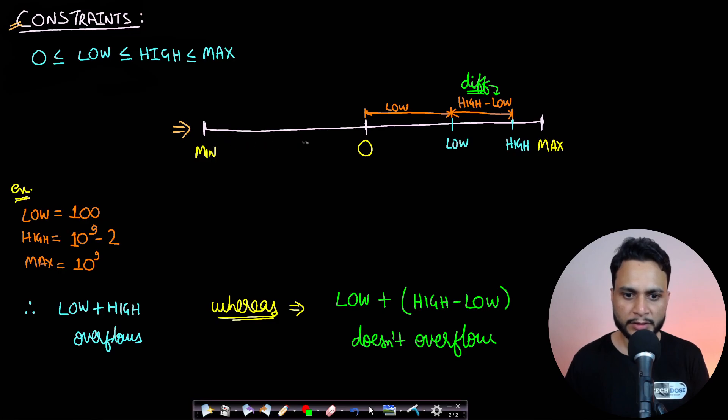If we see it on a number line, the midpoint is actually zero, the left extreme is min and the right extreme is max. Just for simplicity we can take this max to be 10 to the power 9 and min to be minus 10 to the power 9.